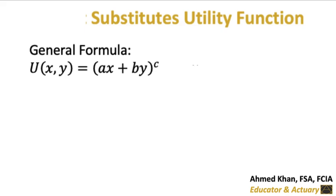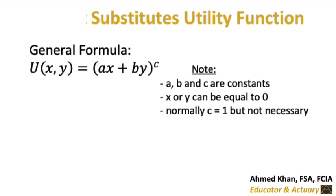Utility is equal to (ax + by)^c. Note a, b, and c are constants, and note that x or y can be zero, because utility could still be positive.